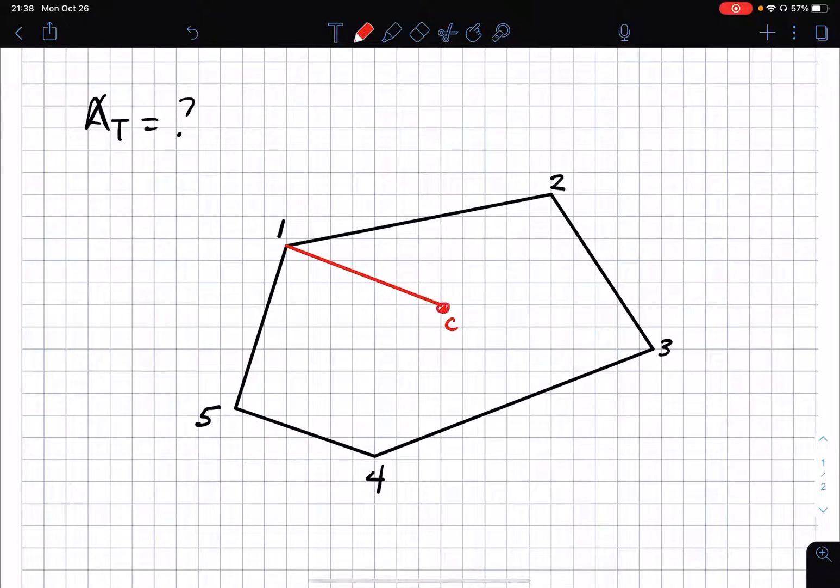By using the same principle all we need to do is to connect the points. Say one to C, that's your first point, then C to two, then C to three, C to four, and C to five. So this will be your area one, area two, area three, area four, and area five.